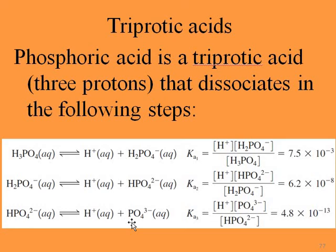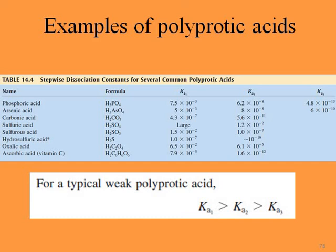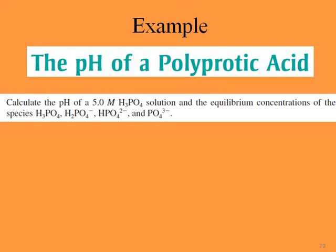As you go from KA1 to KA3, the dissociation constant becomes much smaller. You can see different examples of polyprotic acids: phosphoric acid, arsenic acid, carbonic acid, sulfuric acid, sulfurous acid, hydrosulfuric acid, oxalic acid, and ascorbic acid, with their formulas and KA values. Phosphoric acid is triprotic; the others are diprotic. For typical weak polyprotic acids, KA1 > KA2 > KA3.